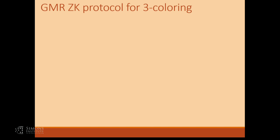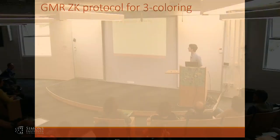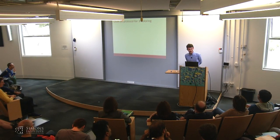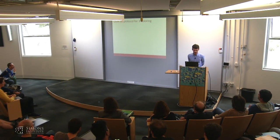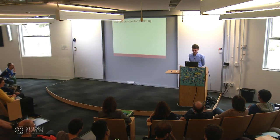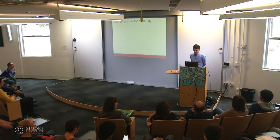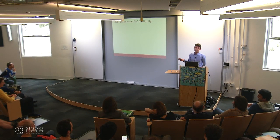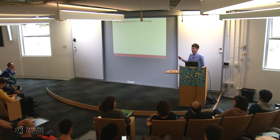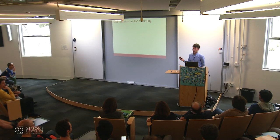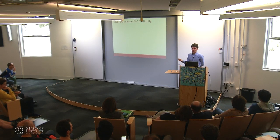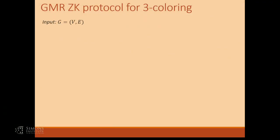I'm going to give you this example because if you've never seen it, it's nice. Also, we're going to try to build on it to make it into a protocol for testing a language that's in the quantum version of NP — QMA — instead of just the classical version of NP, which is the three-coloring problem. Our input is a graph, and what we're trying to determine is whether the graph is three-colorable — a three-coloring being an assignment of at most three colors to all vertices such that each edge has endpoints of different colors.